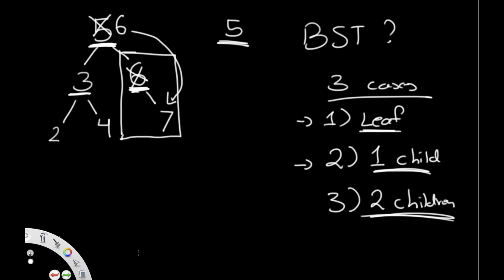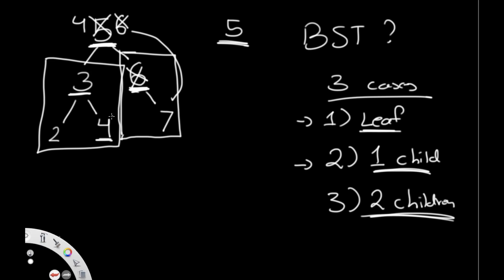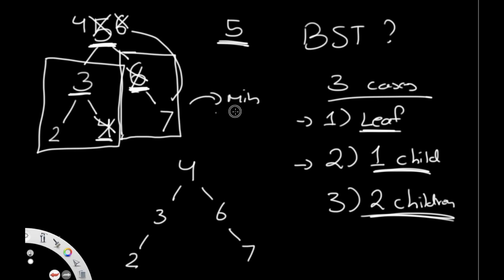One more thing: instead of taking the minimum of the right subtree, we could also take the maximum of the left subtree and do the same steps. The maximum of the left subtree is four. So we replace five with four and then delete that original four node. Since four is a leaf, we just remove it. The result is four at the root, three and six as children, with two under three and seven under six — and everything still follows the binary search tree property. Either method works.